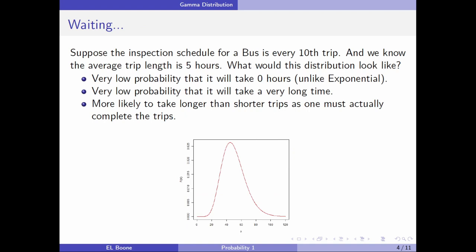Suppose the inspection schedule for a bus is every tenth trip. They just bring it in, look it over, check it out. The average trip length is 5 hours. What would this distribution look like?